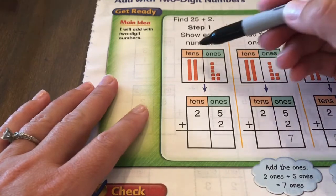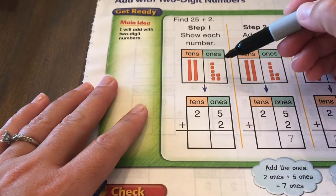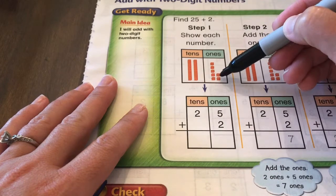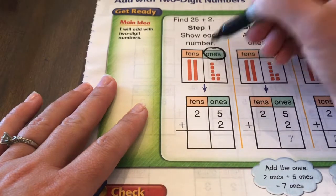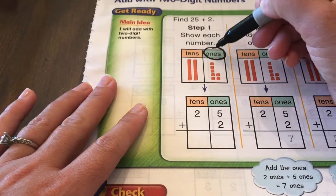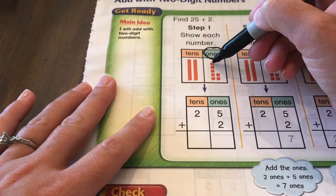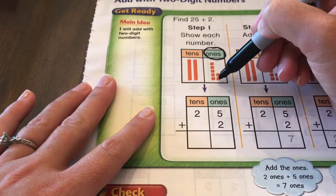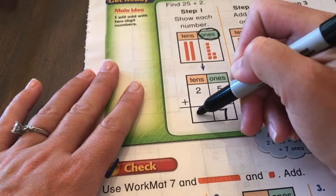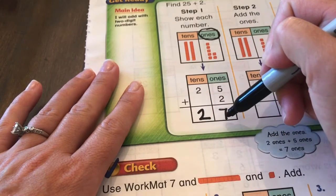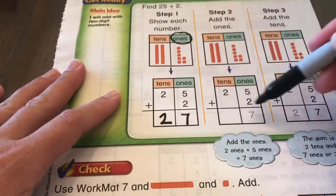So you're going to build the number 25, and then 2, and then what you're going to do is you're going to start by adding the ones. You always have to start by adding the ones. So we have 5 plus 2, which is 7, and then we have two tens. So our answer is 27, and they've shown that here for you.